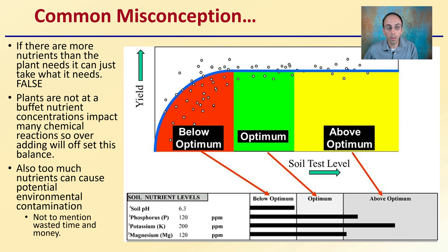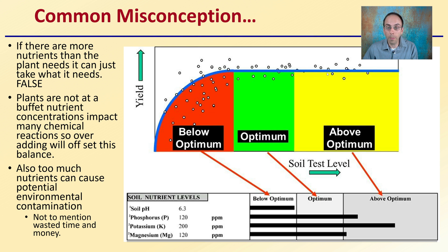Too many nutrients can cause potential environmental contamination, not to mention wasted time and money. So it's not just a matter of giving plants a buffet of nutrients and letting them pick out what they need. You want to be fertilizing your crops to stay in this optimum range. If you go above the optimum range, you're not getting any more yield — you're wasting time, wasting money, potentially reducing yields, and increasing the odds of environmental contamination.